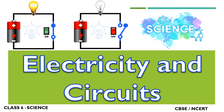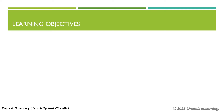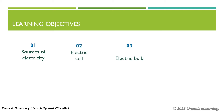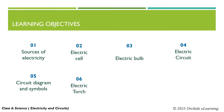Electricity and Circuits, Class 6 Science. In this lesson, we will learn about sources of electricity, electric cell, electric bulb, electric circuit, circuit diagram and symbols, electric torch, conductors and insulators, and electrical safety.